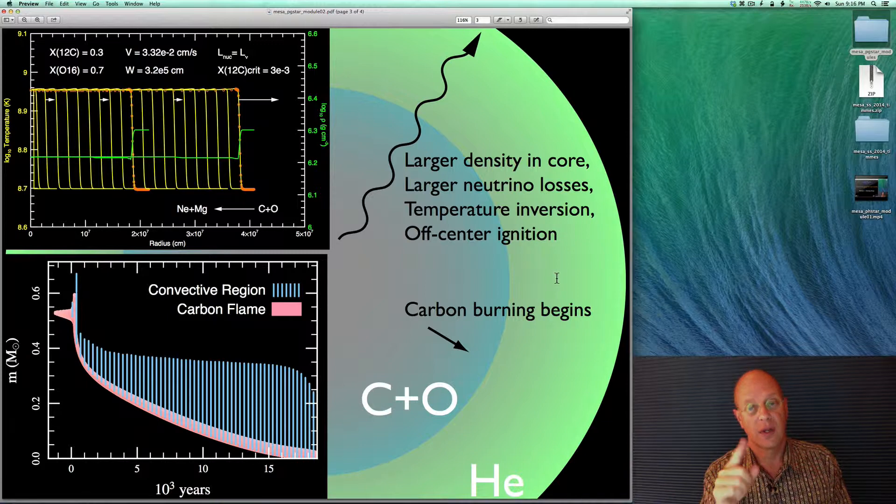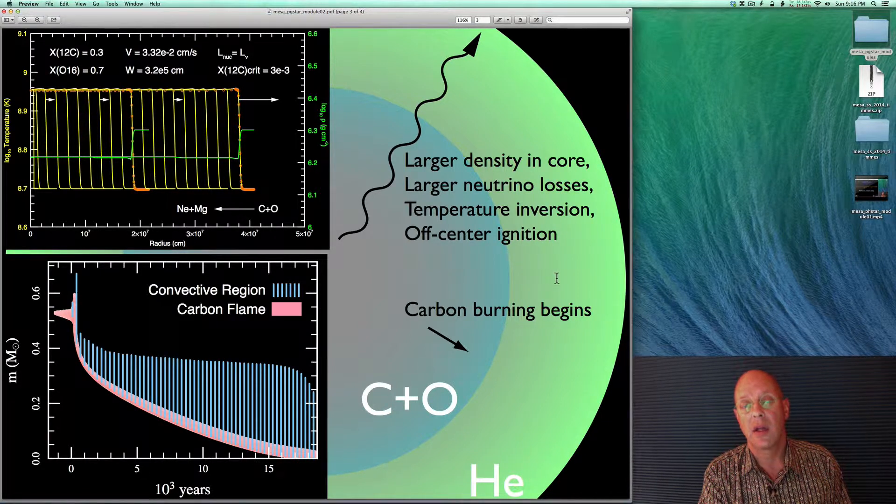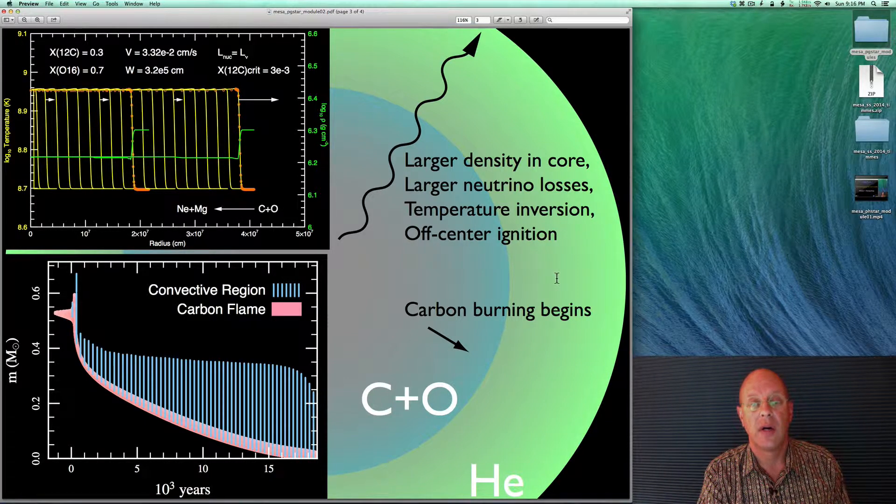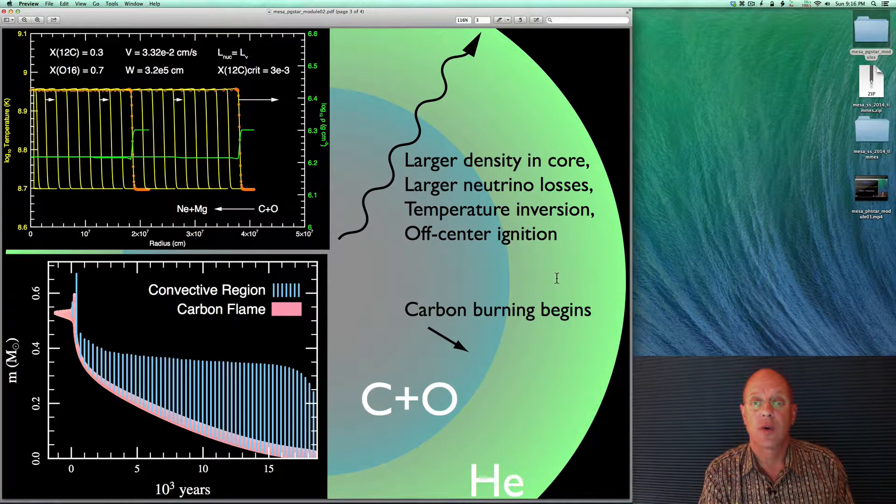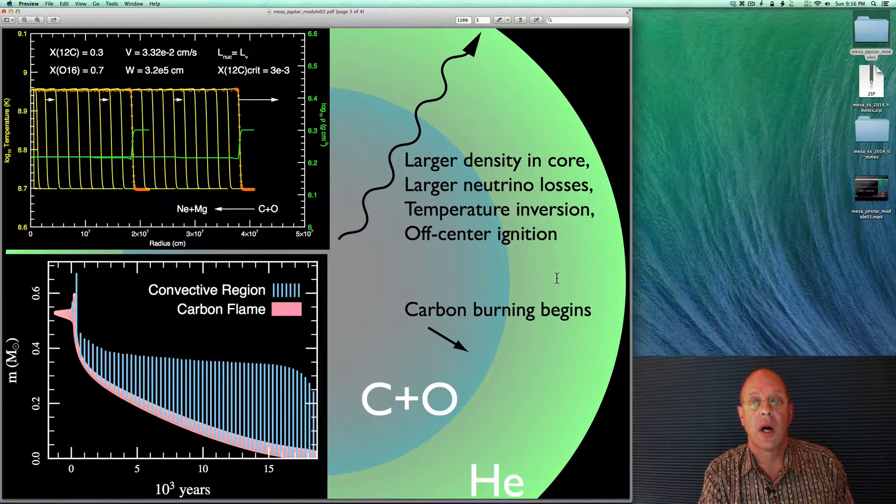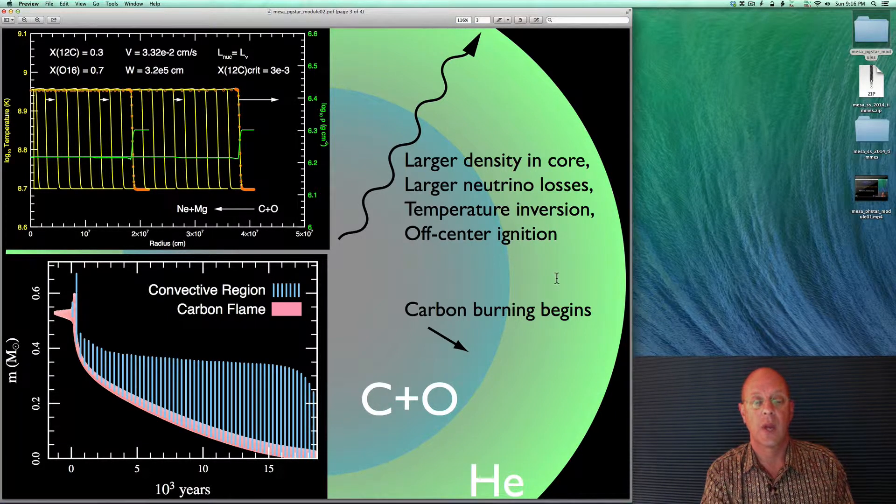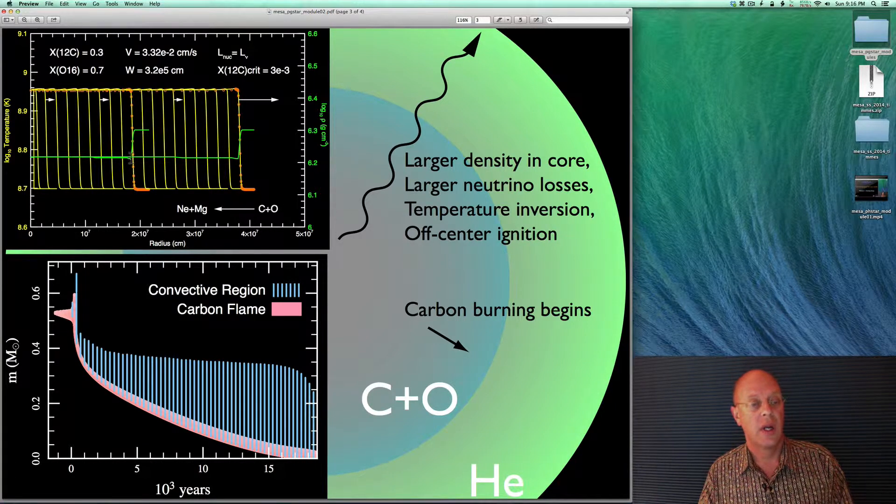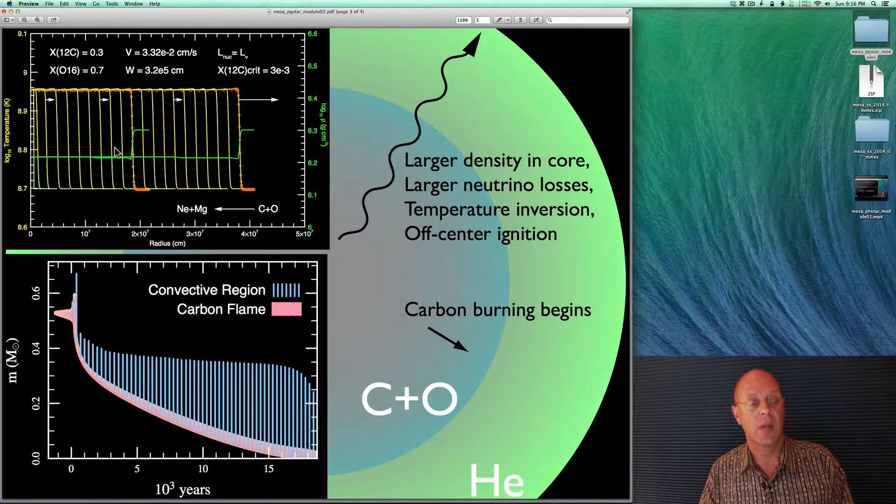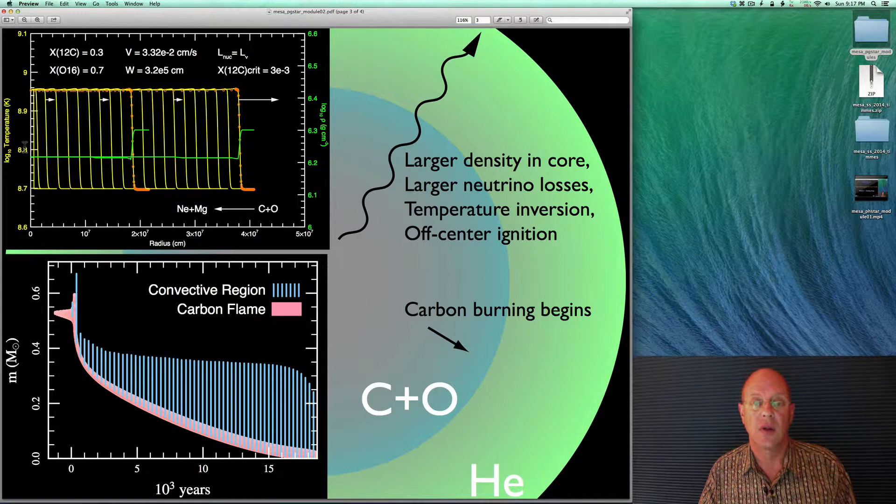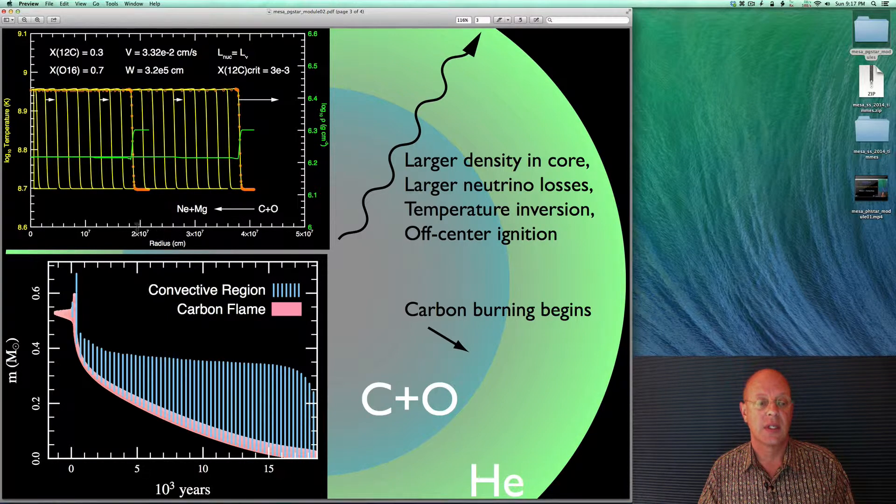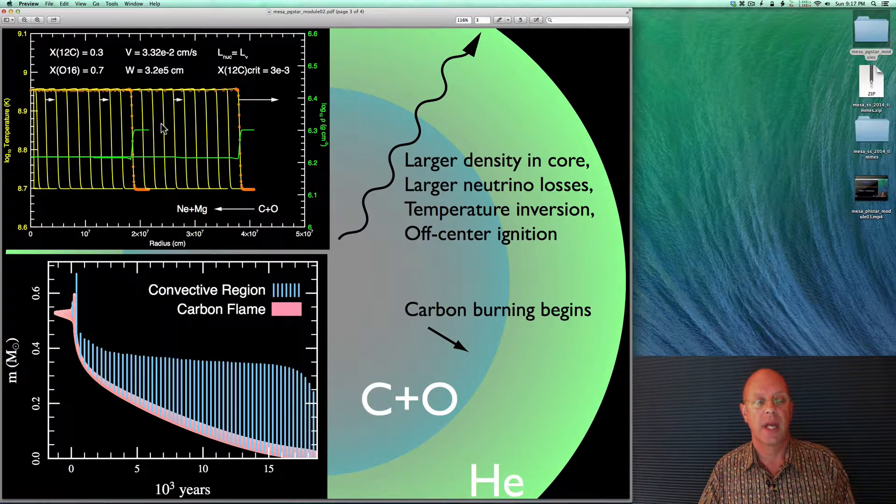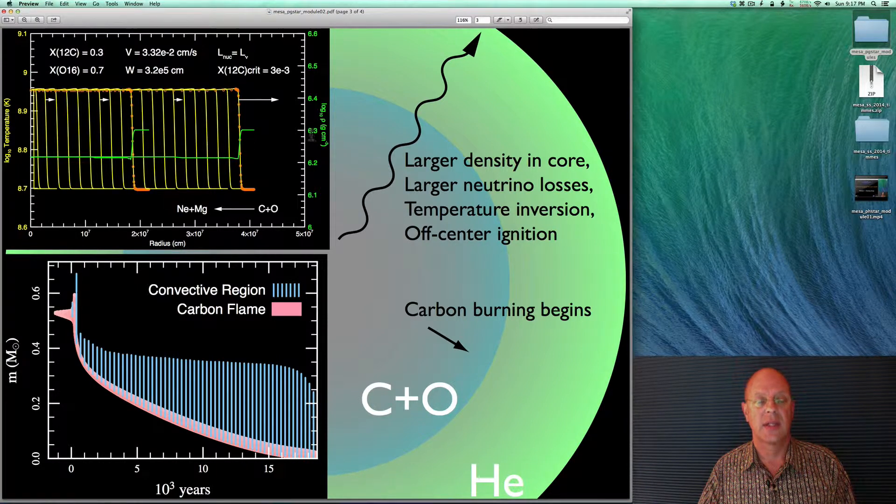And that off-center ignition is then going to get convective behind the burning point, and a flame is going to begin propagating toward the interior of the carbon-oxygen core. This, of course, turns the carbon-oxygen core into an oxygen-neon-magnesium core. So, you're going to begin your burning out here. Over on the left upper part here is what the flame looks like as it propagates in. On the y-axis is the log of the temperature. On the x-axis is the radius.